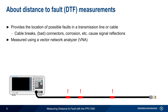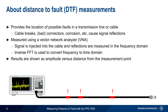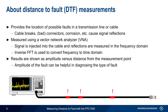We can use a Vector Network Analyzer to make distance to fault measurements. At a high level, this is done by injecting a signal into the cable under test, and then measuring the reflections in the frequency domain. An inverse fast Fourier transform, or IFFT, is then used to convert this frequency domain information into the time domain. These time domain results are then shown as a plot of amplitude versus distance from the measurement point. In some cases, the relative amplitude of the fault can also provide some indication as to the nature of the fault, or the cause of the reflection.